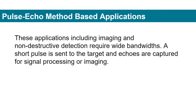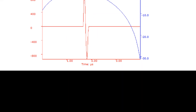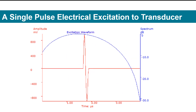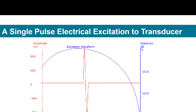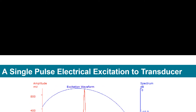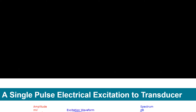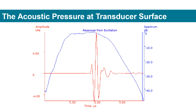Pulse echo method-based applications — including imaging and non-destructive detection — require wide bandwidth. A short pulse is sent to the target, and echoes are captured for signal processing or imaging. For example, when a single-cycle electrical pulse is applied to the transducer, ideally the output is also a single-cycle acoustic pulse. In reality, a much longer pulse with ring-down will be obtained instead.